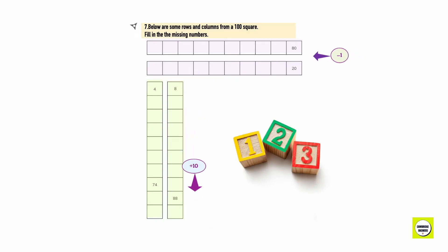Below are some rows and columns from 100 square. Fill in the missing numbers. When we have to move back we have to subtract 1. Let's start subtracting 1 from 80. 79, 78, 77, 76, 75, 74, 73, 72, 71. 20, 19, 18, 17, 16, 15, 14, 13, 12, 11. When we have to move down we have to add 10.